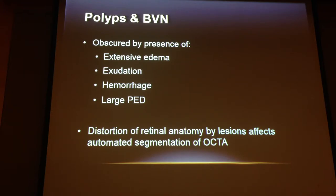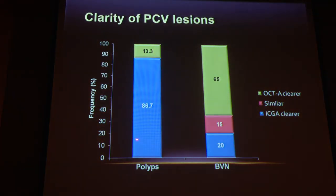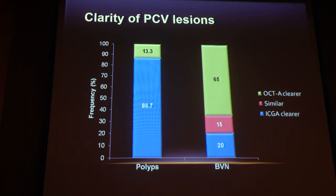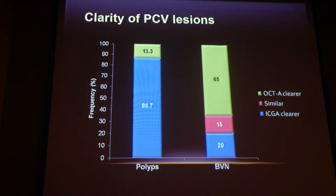Just how clear are the polyps? We took a look at this in our series. When comparing ICG angiogram versus OCT angiogram, for polyps, in 87% of cases we found that the ICG angiogram showed the polyps more clearly. In contrast, the reverse was true for the BVN: in 65% of cases, OCT angiography showed the branching vascular network more clearly compared to ICG angiogram, and in a further 15% the clarity was about the same. Only 20% of the time was ICG better for the BVN.